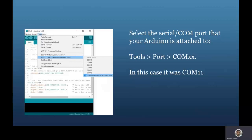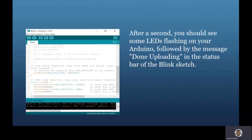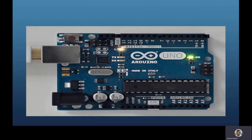With the Arduino board connected and the Blink sketch open, press the Upload button — the arrow facing right — to compile and upload your code. After a few seconds you should see LEDs flashing on your Arduino, followed by the message 'Done uploading' in the black window at the bottom and in the status bar of the Blink sketch. You can then see the LED blinking on your Arduino board.